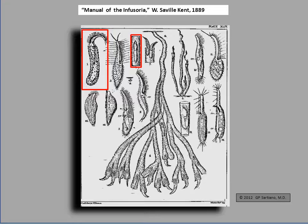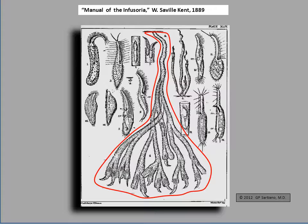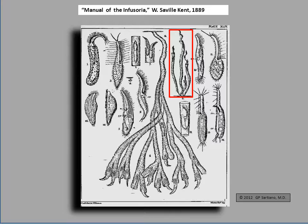The plate also shows two organisms sharing a single lorica, long tubular individual loricas, and a multiplex lorica housing what is effectively a sessile colony of organisms.